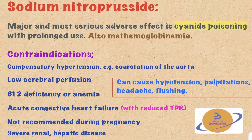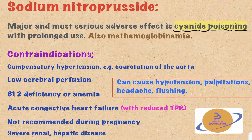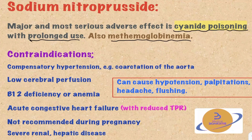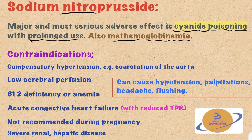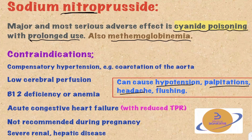The major and most serious adverse effect of sodium nitroprusside is cyanide poisoning. Remember, the compound of sodium nitroprusside has five molecules of cyanide in it. With prolonged use, this will result in the accumulation of cyanide molecules and cyanide poisoning. Also, sodium nitroprusside can result in methemoglobinemia — any compound with nitro in its structure will result in the conversion of ferrous iron into ferric iron. The hemoglobin with the ferric iron state is called methemoglobin. Other side effects include hypotension, palpitations, headache, and flushing.